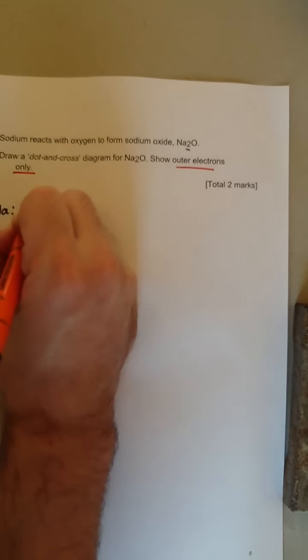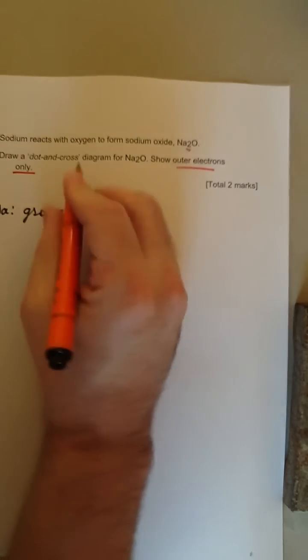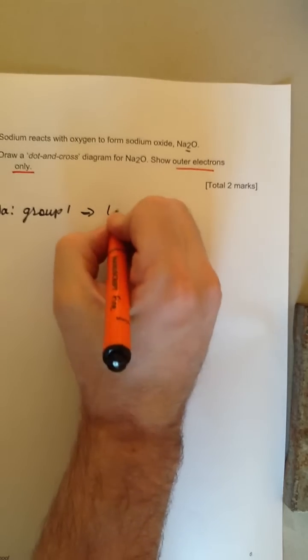We need to look at where sodium and oxygen are in the periodic table. Sodium is in group one, therefore it has one electron in its outer shell.